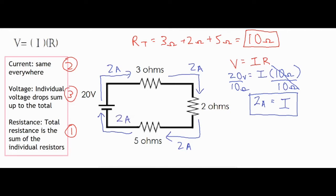So I found my current of 2 amps. All I did was take that total voltage of 20 volts and the total resistance of 10 ohms, and then I took V divided by R and then I got my total current of 2 amps.